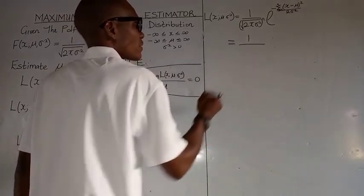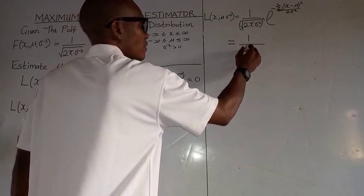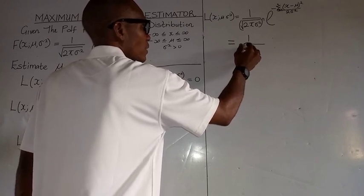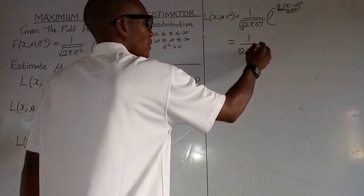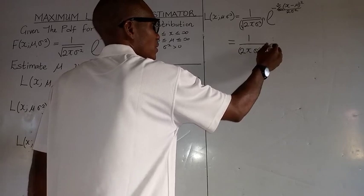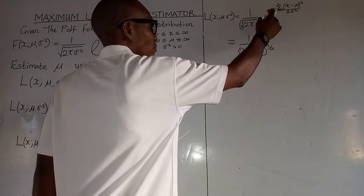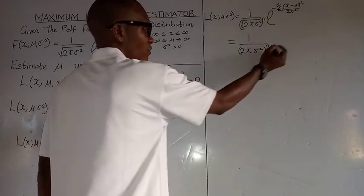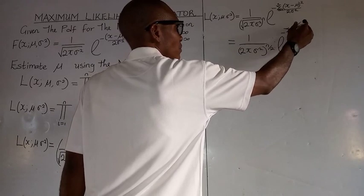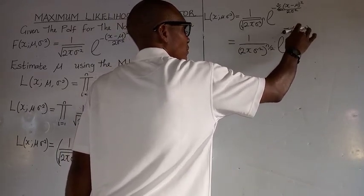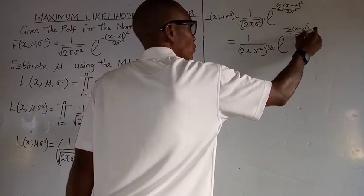We have 1 all over 2 pi, raised to the power n all over 2. Because if we bring the square root with n, we get n multiplied by one half, which gives n all over 2. Then we have the exponent: minus the summation of x minus mu, all squared, all over 2 sigma squared.